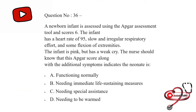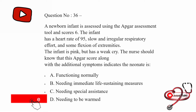A newborn infant is assessed using the APGAR assessment tools and scores 6. The infant has a heart rate of 95, slow and irregular respiratory efforts, and some flexion of extremities. The infant is pink but has a weak cry. The nurse should know that this APGAR score along with the additional symptoms indicates the neonate is: functioning normally; needing immediately life-sustaining measures; needing special assistance; or needing to be warm. The correct answer is needing special assistance.